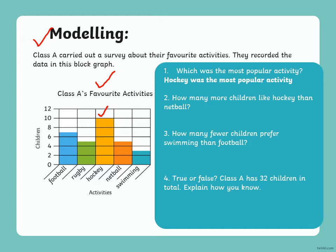We can see in the bar graph that ten children like hockey and five like netball. So, ten minus five is five — five more children like hockey than netball.